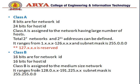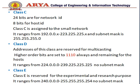Next is Class B. In Class B, we have 16 bits for the network ID and 16 bits for the host ID. It is assigned to medium-size networks and its range is from 128 to 191. Its subnet mask is 255.255.0.0.